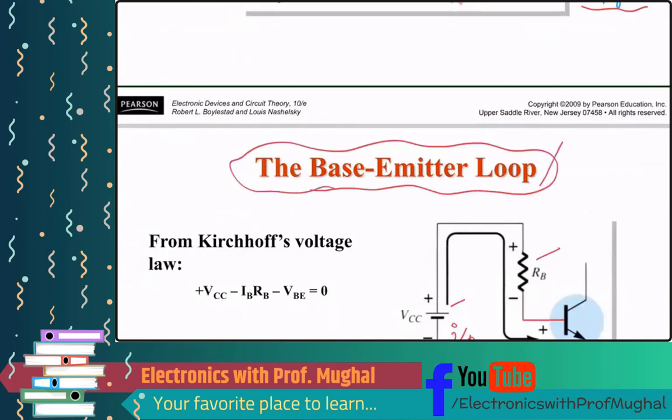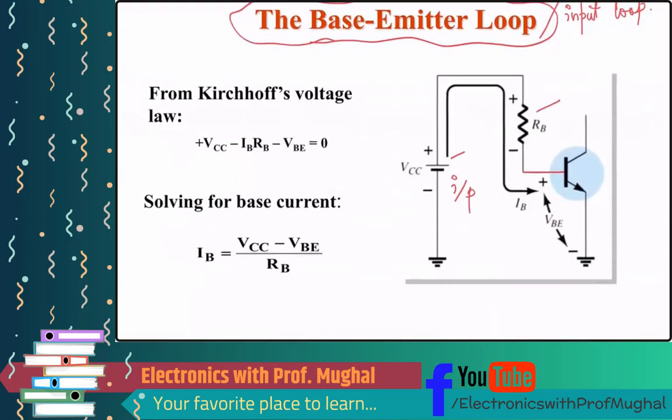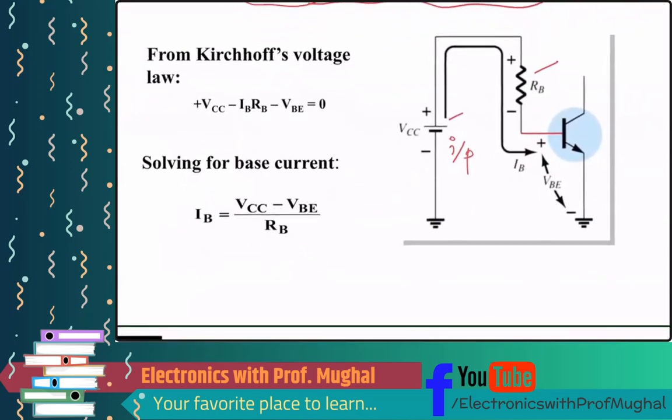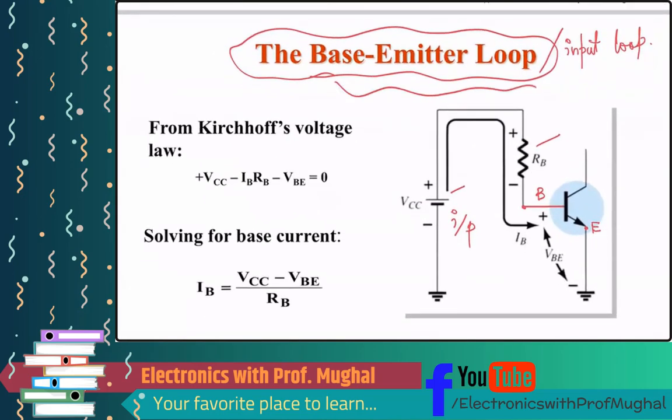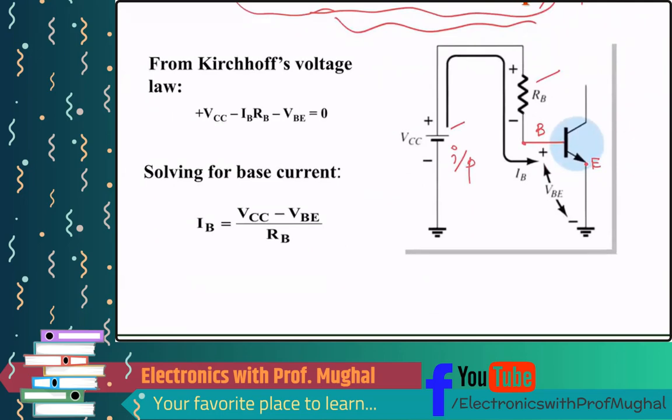So this is your input loop, input loop. And because this input loop is between base and the emitter, emitter is here. So we would refer to it as a base emitter loop. If you, instead of this, if you wish to write input loop, that is also fine, but it's pretty obvious that this input loop is between a base and the emitter. So that's why the name base emitter loop. Now we're going to start from here. We're going to start from here, applying KVL.